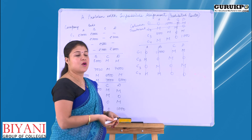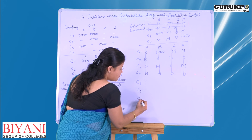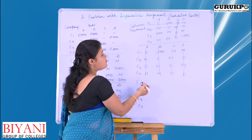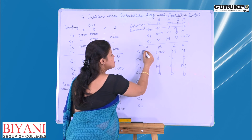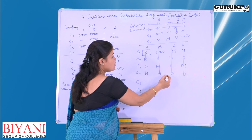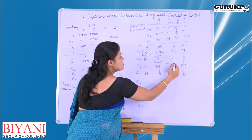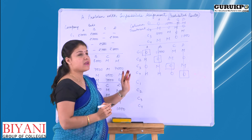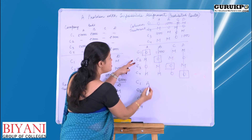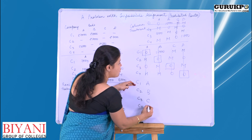Now we will move to the next step of finding the optimal solution. For C1, C2, C3, and C4, we start with the allocations. Where there is a single 0, we mark it with a block. C1 is allocated to A, C2 is allocated to B, C3 is allocated to C, and C4 is allocated to D.